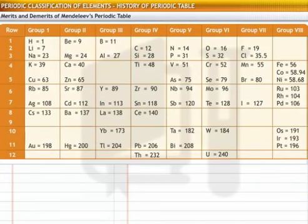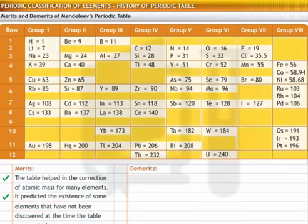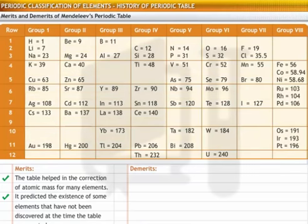Like other attempts at classification of elements, Mendeleev's periodic table also had some merits and demerits. Let's take a look at the merits first. The table helped in the correction of atomic mass for many elements. It predicted the existence of some elements that had not been discovered at the time that the table was created. Because of its merits, the periodic table is widely accepted as a system of classification.